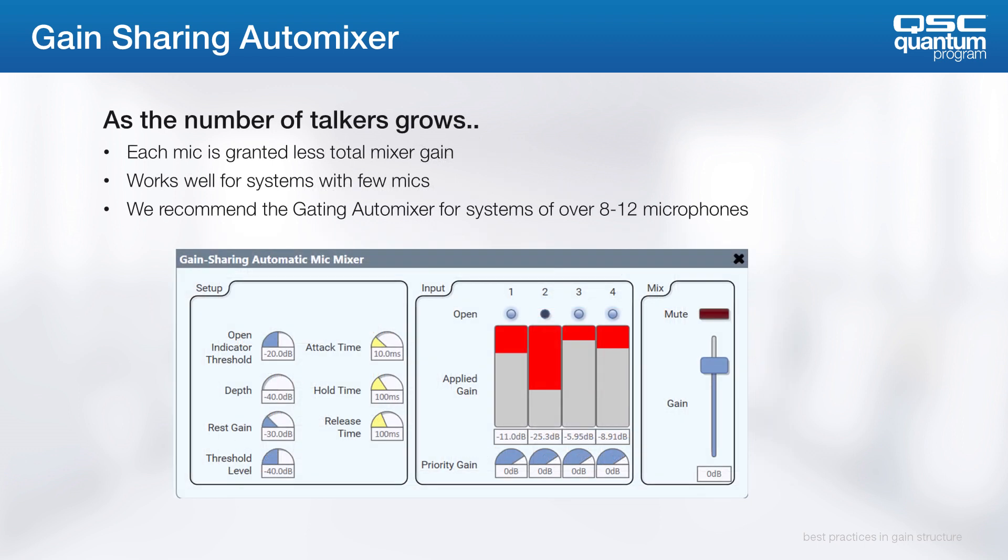In the case of one talker, that one mic is granted all the mixer gain. However, as the number of talkers increases, each mic is granted less of the total mixer gain. Now, in reality, gain-sharing automixers work well in systems with fewer microphones. When your system needs over 8 microphones, or in installations with acoustical challenges, we strongly recommend using the gating automixer over the gain-sharing automixer.